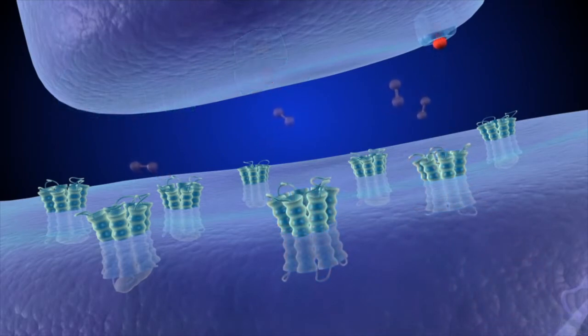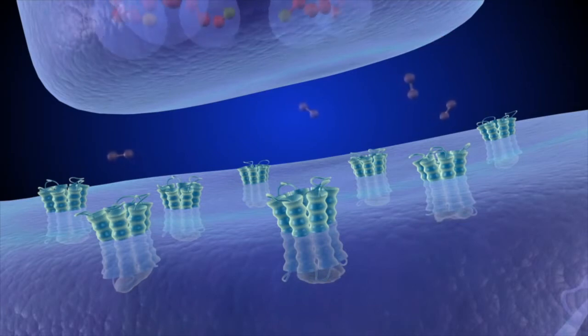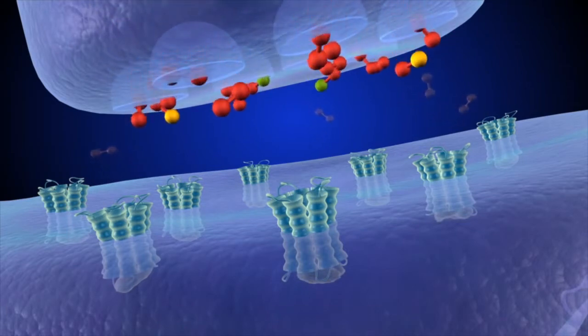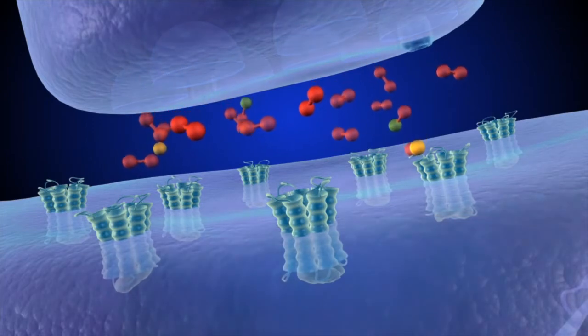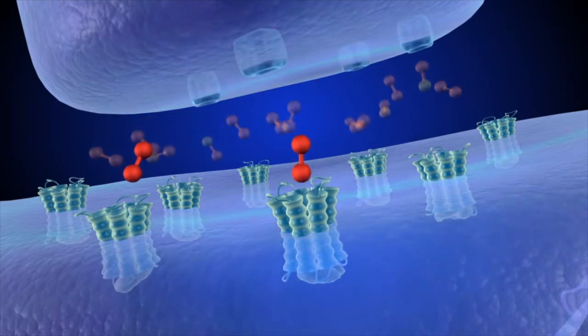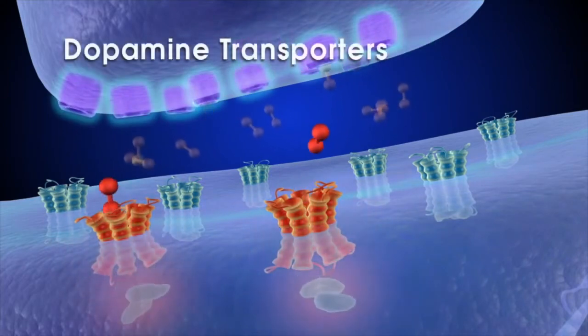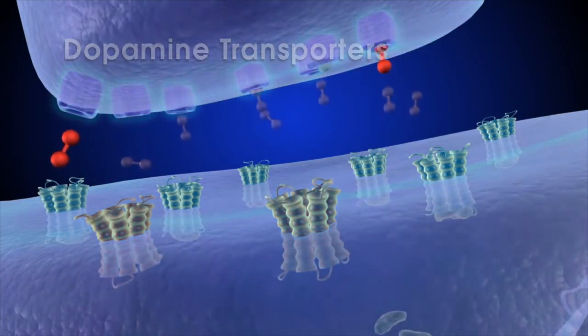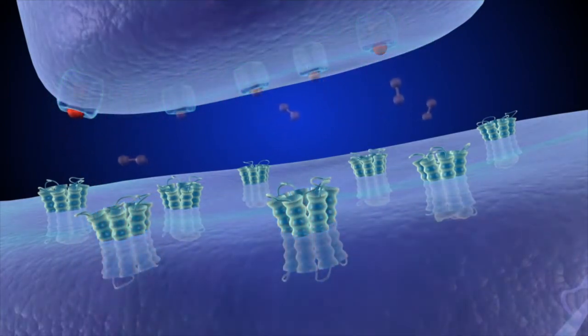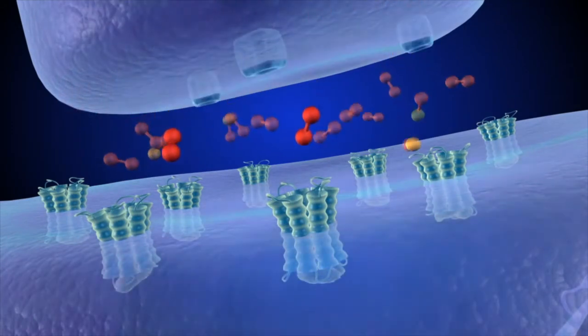When there is excess dopamine, and as these molecules drop off receptors, they are free in the synapse again. Some dopamine molecules re-enter the sending cell via a special protein called a dopamine transporter on the sending cell's membrane. Back inside the cell, these dopamine molecules are now available for re-release.